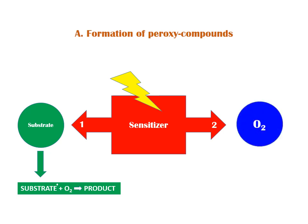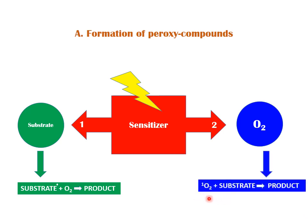In Mode 2, the excited state sensitizer first interacts with ground state oxygen. The ground state oxygen, upon receiving energy from the sensitizer, goes to an excited state. This excited state oxygen then interacts with the substrate to give a product. Remember: excited state oxygen is in the singlet state, whereas ground state oxygen is in the triplet state — the opposite of most substrates.